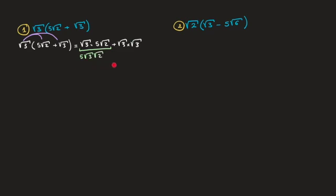To write this expression in its simplest form we use the fact that the square root of a number a times the square root of a number b is equal to the square root of a times b. I'll go ahead and box that important result.